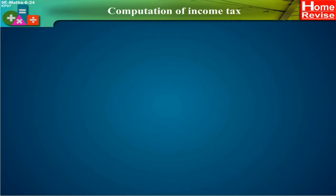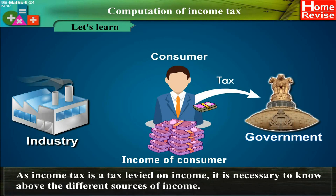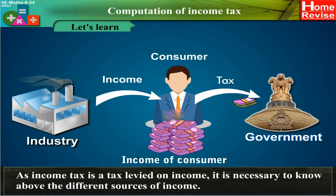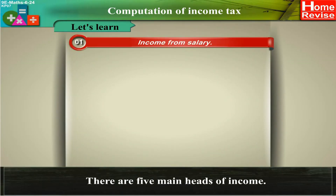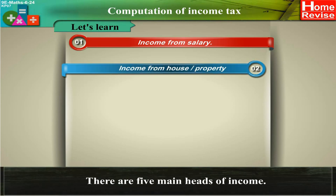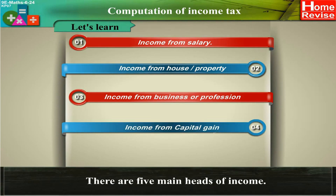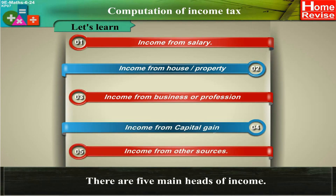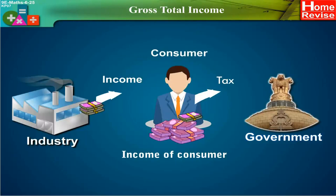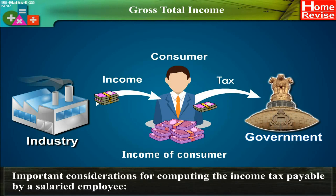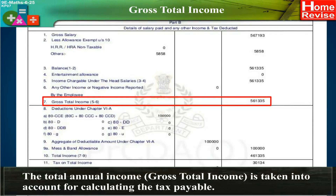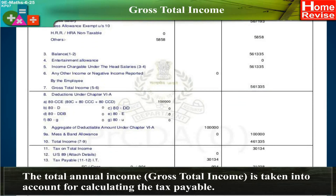Computation of Income Tax: As income tax is a tax levied on income, it is necessary to know about the different sources of income. There are five main heads of income: (1) Income from salary, (2) Income from house or property, (3) Income from business or profession, (4) Income from capital gain, (5) Income from other sources. The total annual income, i.e., gross total income, is taken into account for calculating the tax payable.